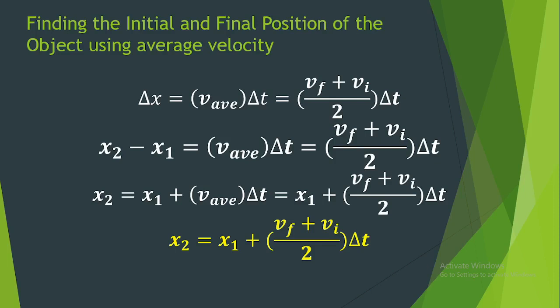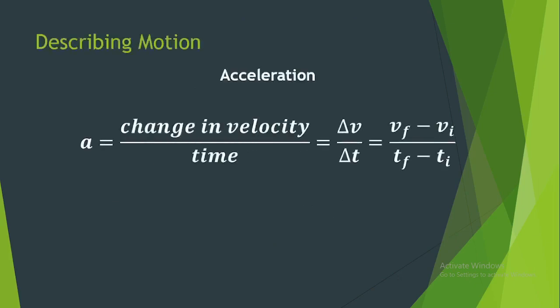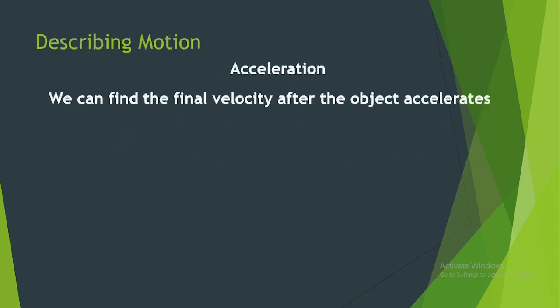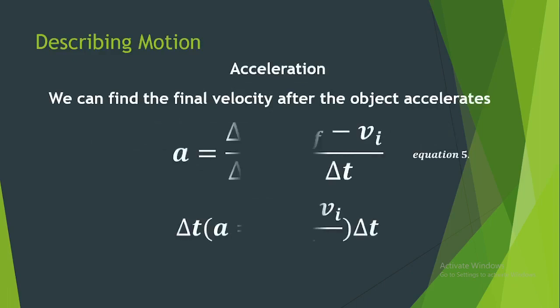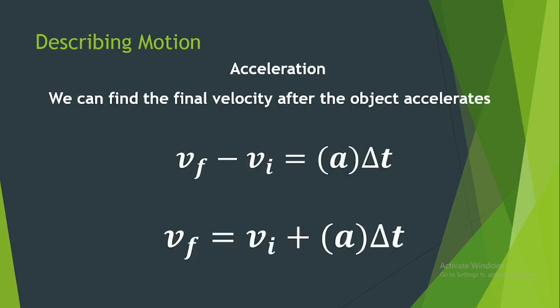Another concept related to motion that we experience in daily life is acceleration. If you ever see a snake, you might run faster — this change in your velocity is called acceleration. Acceleration, denoted by lowercase a, is a vector quantity equal to Δv / Δt, which is also equal to (v_f − v_i) / (t_f − t_i). This is equation 5. From equation 5, we can find the final velocity after the object has undergone acceleration: a × Δt = v_f − v_i, so v_f = v_i + a × t. This is equation 6.